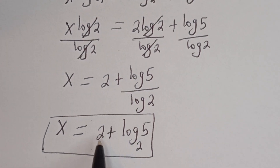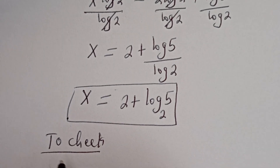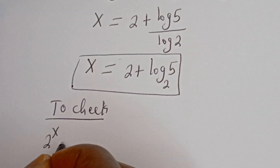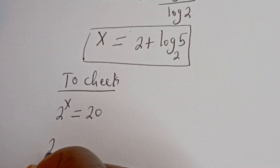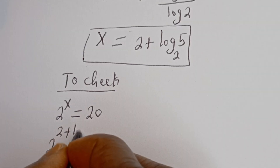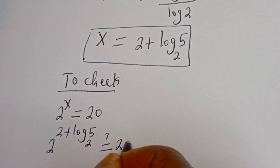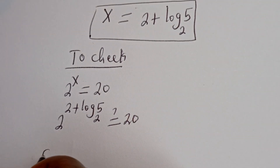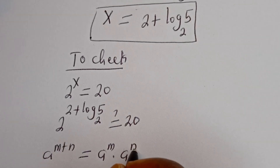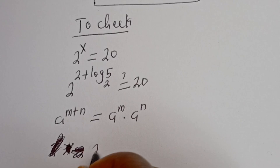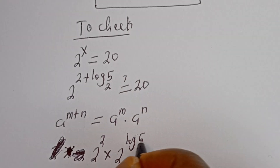But let's check to confirm if this answer is right or wrong. To check, we have the given equation 2 to the power of s is equal to 20. When s is 2 plus log 5 base 2, we have 2 to the power of 2 plus log 5 base 2 must equal 20. Take note: if you have a to the power of m plus n, this equals a to the power of m multiplied by a to the power of n. Then this can be written as 2 to the power of 2 multiplied by 2 to the power of log 5 base 2.